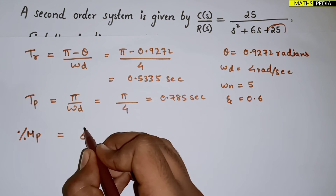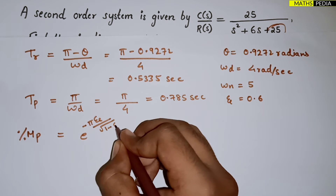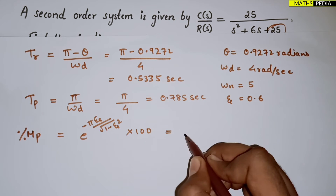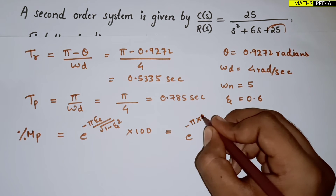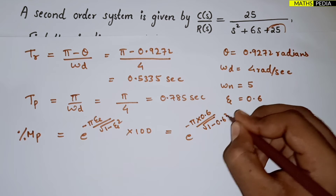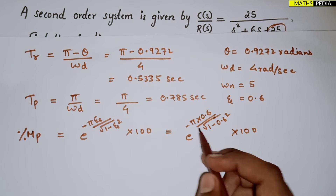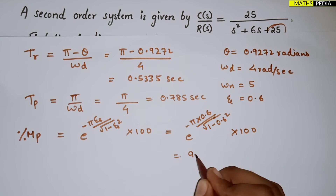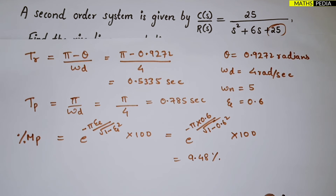Next, peak overshoot Mp is calculated in percentage: Mp = e^(−πζ / √(1 - ζ²)) × 100%. Substituting ζ = 0.6, we get e^(−π × 0.6 / √(1 - 0.6²)) × 100. Putting it in the calculator, the answer is 9.48%.